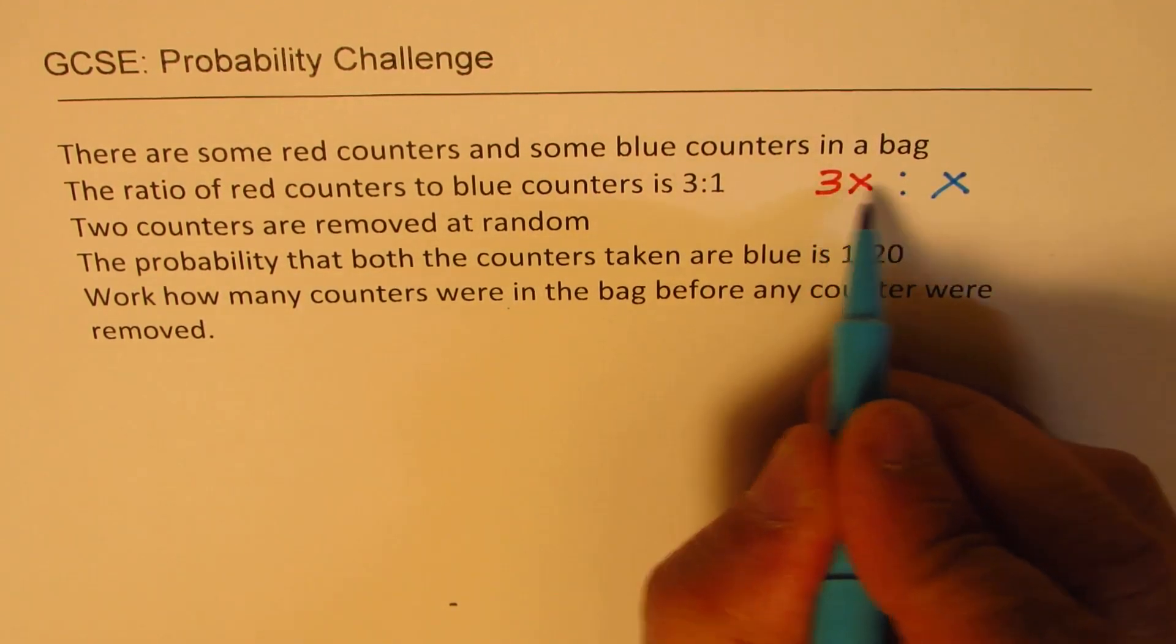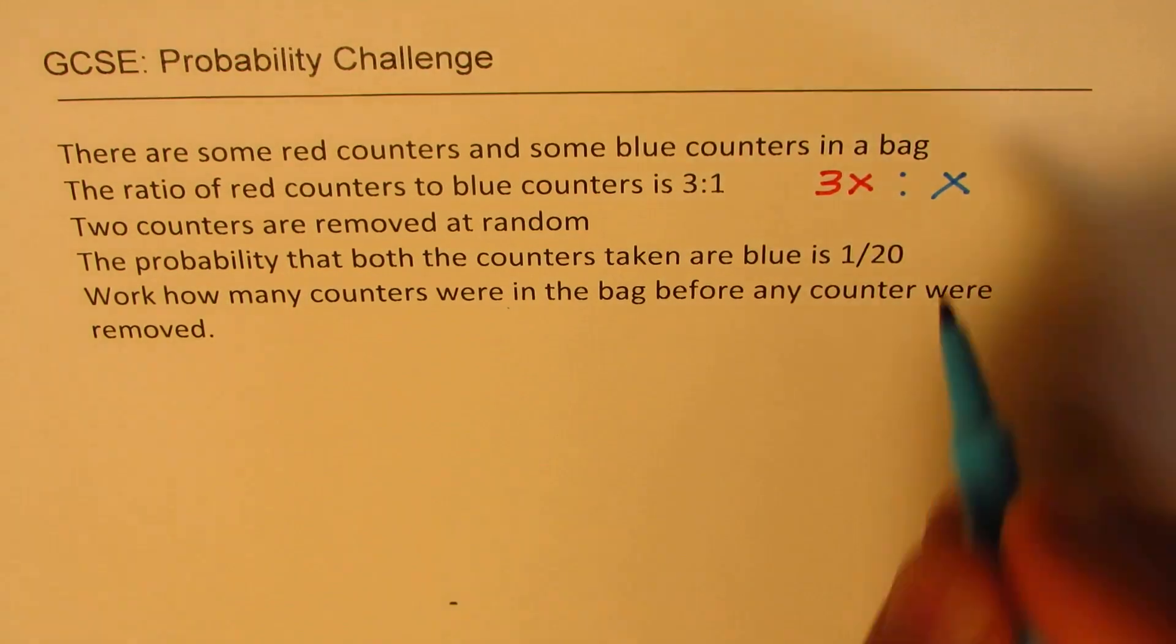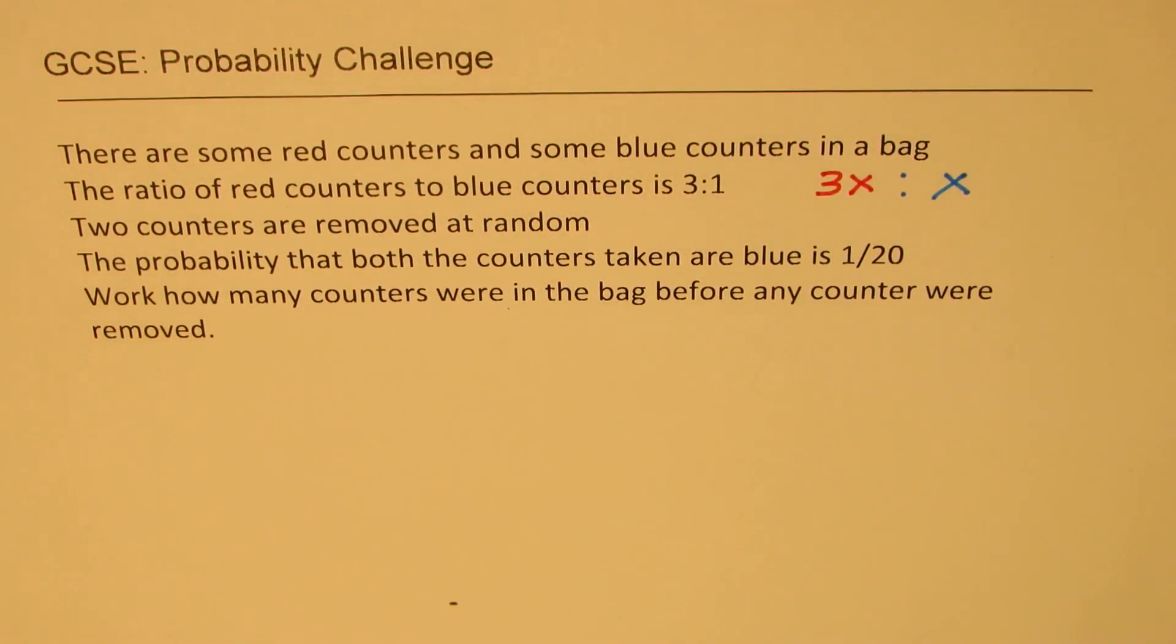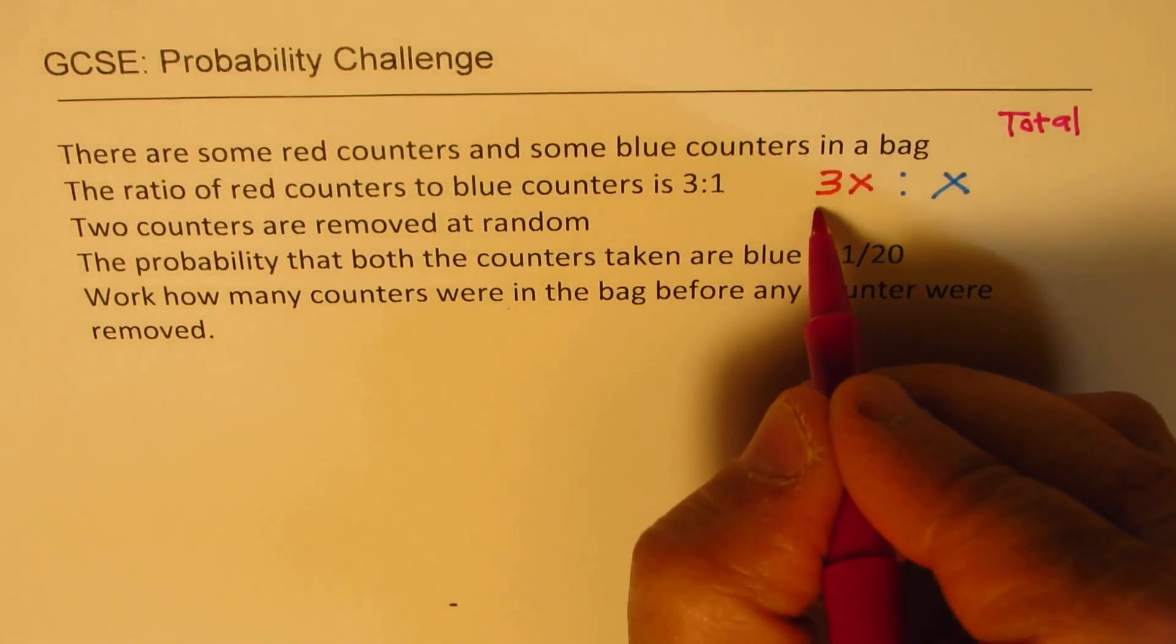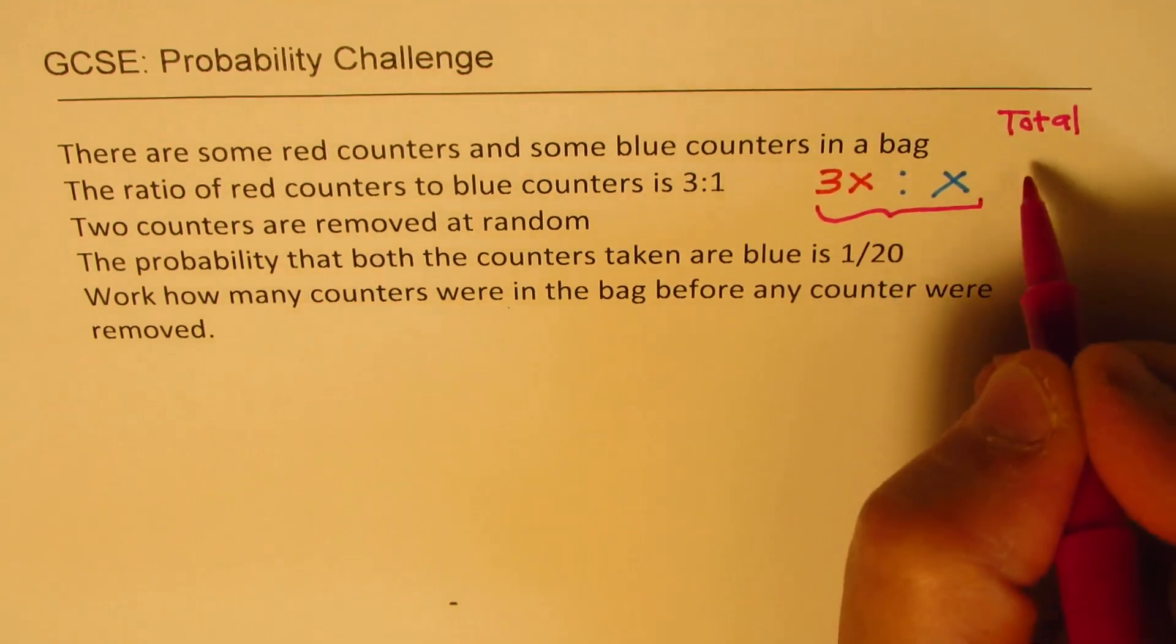Now always this ratio will be 3 to 1. Now here key is that you have to work with total. So whenever you do this, you have to write total also. So when you add these two, what do you get? You get 4x.